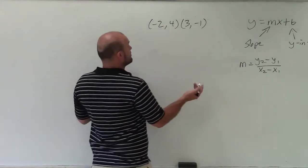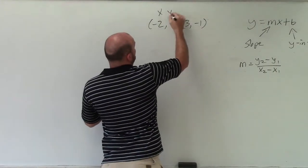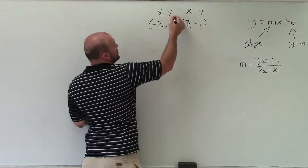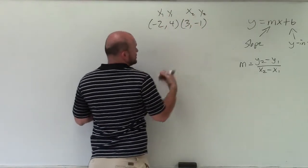Now I just need to determine what are my x2, y2s. Well, since these are both coordinates, I just need to differentiate between them. So I'll call these the ones and these the twos.